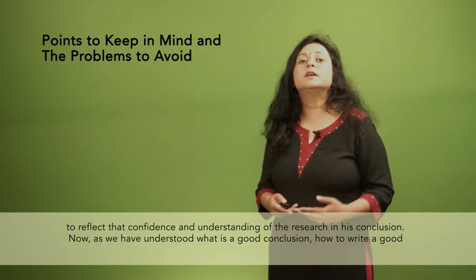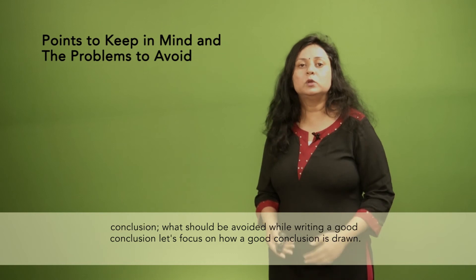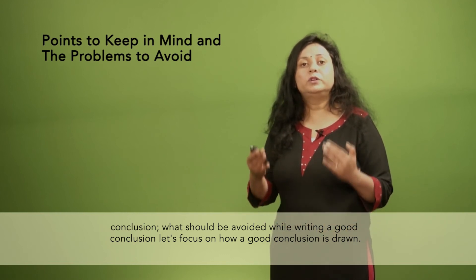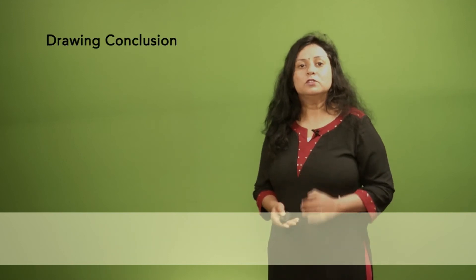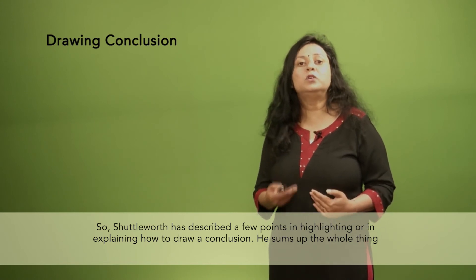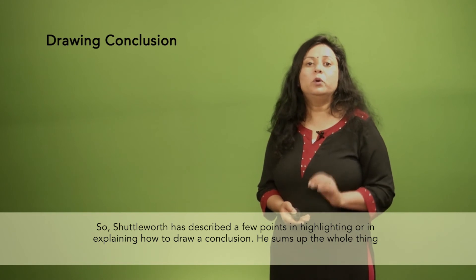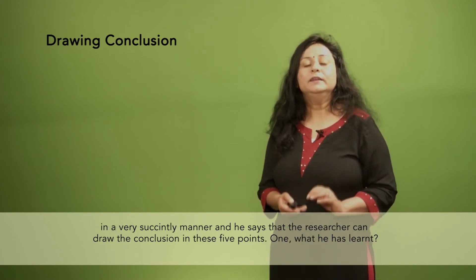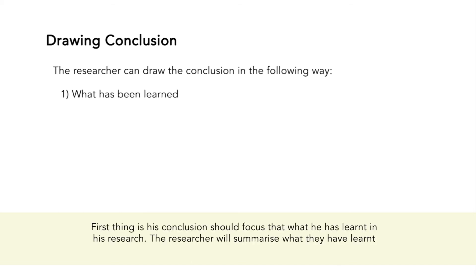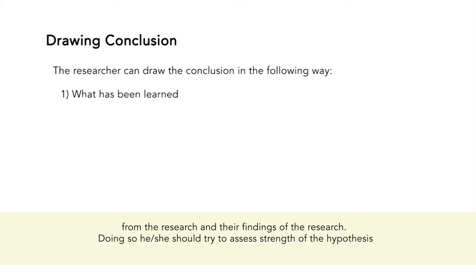As we have understood what a good conclusion is, how to write it, and what should be avoided, let us focus on how a good conclusion is drawn. Shuttleworth has described a few points explaining how to draw a conclusion. He sums up the whole thing and says that the researcher can draw the conclusion focusing on five points. The first is what he has learnt — the conclusion should focus on what has been learnt in the research, summarizing the findings.